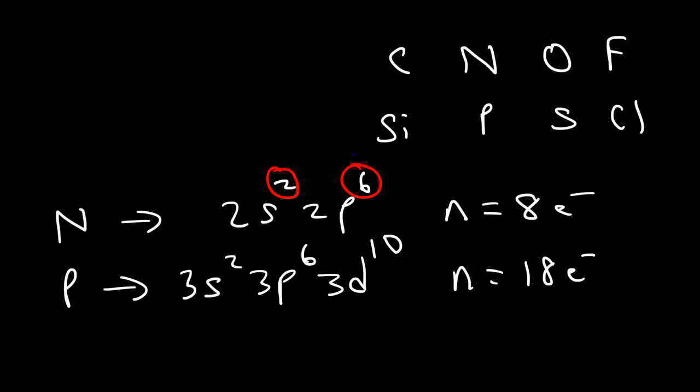Anything in the third row or below can have an expanded octet, but second-row elements like carbon, nitrogen, oxygen, and fluorine cannot have an expanded octet — they cannot have more than eight electrons.